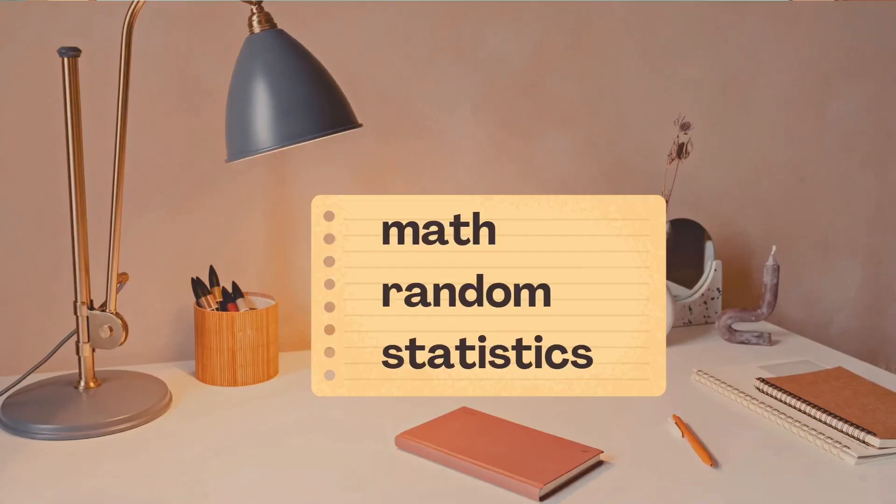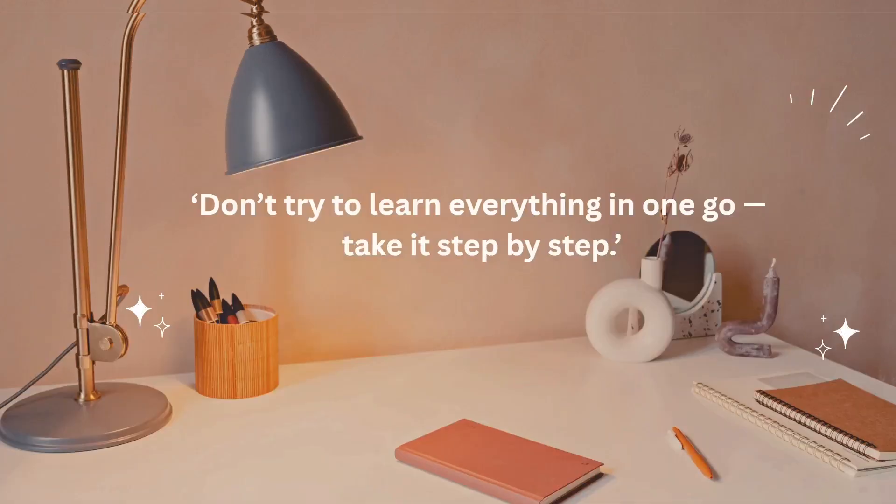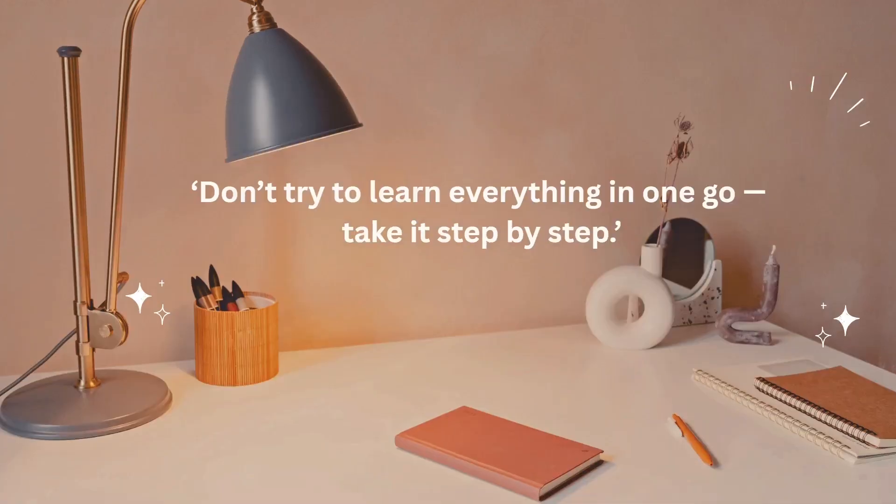One evening he opened his notebook and wrote the name of the modules: math, random, and statistics. At first the number of functions in these modules looked a bit intimidating. But Sid remembered his golden rule, don't try to learn everything in one go, take it step by step.